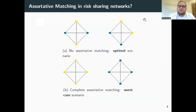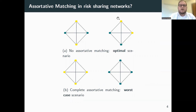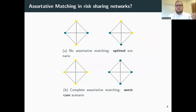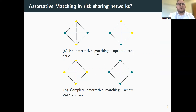To think about this in networks, I consider both optimal networks and worst-case networks. In a simple network with two groups, the optimal scenario is no assortative matching — risk-averse and risk-tolerant people are next to each other and can transact risk. The worst case is all risk-averse people on one side and all risk-tolerant on the other, so they don't transact at all.